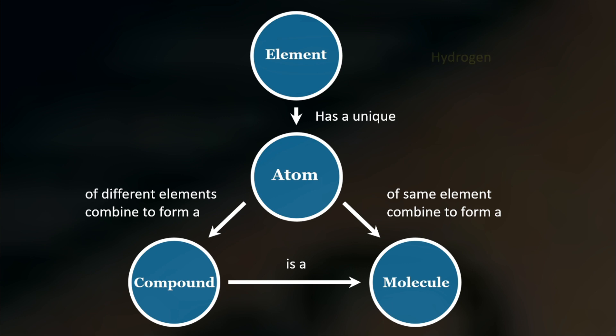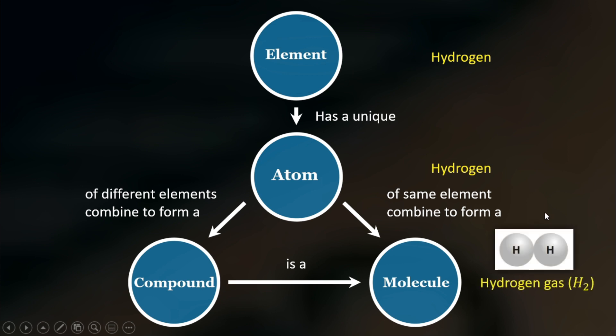To illustrate this, say we have an element hydrogen. This element has a unique hydrogen atom. When two atoms of hydrogen combine, it will create a molecule of hydrogen gas. On the other hand, if atoms of hydrogen combine with oxygen, it will create a compound known as water. Water is also a molecule, but hydrogen gas is not a compound. So goes the phrase: all compounds are molecules, but not all molecules are compounds.